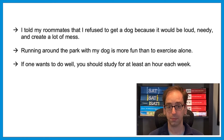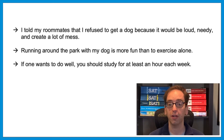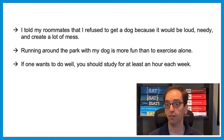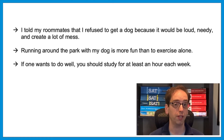The second example: 'Running around the park with my dog is more fun than to exercise alone.' Look at the verb — 'running' ends in -ing, but it's being compared to 'to exercise.' You can't take an -ing verb and compare it to a 'to' verb — that's not parallel. So we have to say either 'running is more fun than exercising,' or 'to run is more fun than to exercise.'